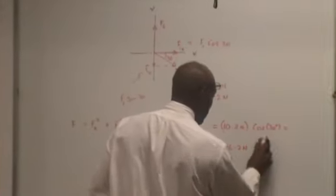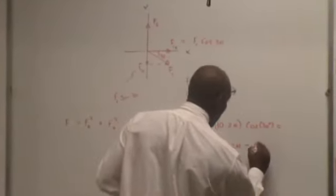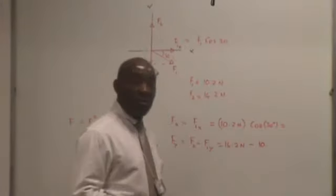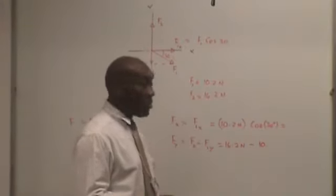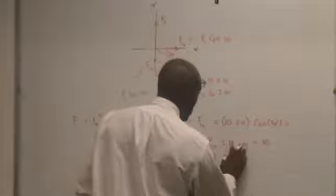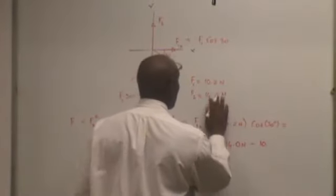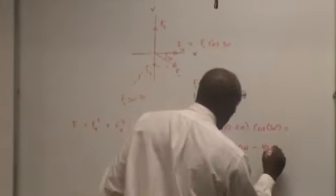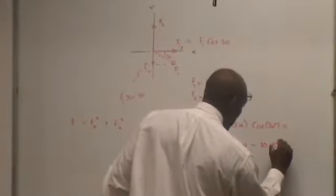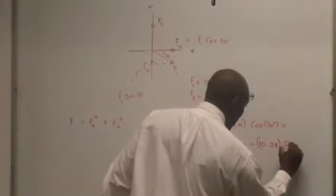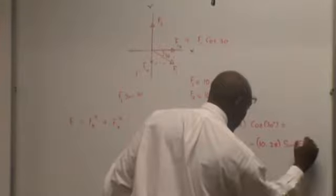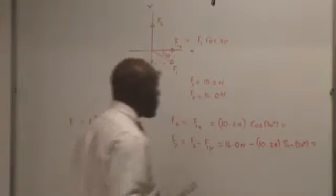And the F2 is 16.2 minus 16... no. Yes, 16.0 minus 10... you said 15.2? 16.0 minus 10.0, which is 10.2 times the sine of 30. And that's going to give me some number.